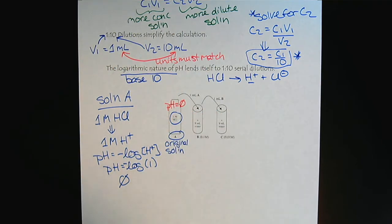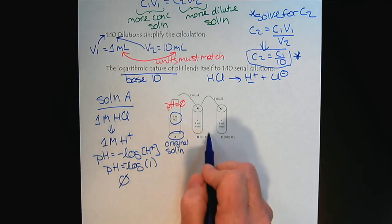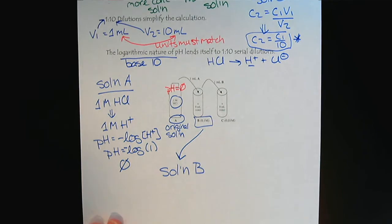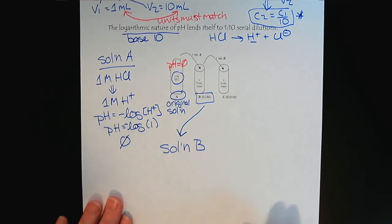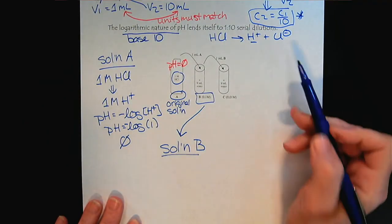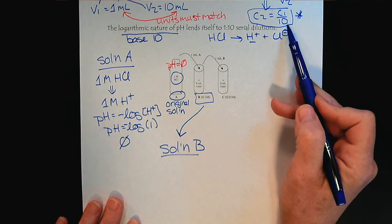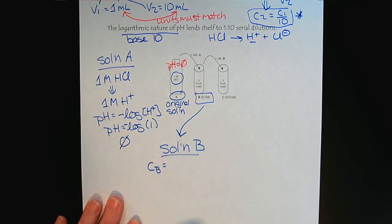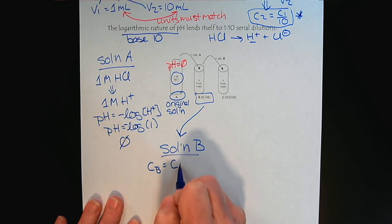Now that we know about solution A, let's look at solution B. Here's solution B, we'll work on solution B right here in this space. So now we need to use our serial dilution calculation. So the concentration of solution B will be the concentration of solution A divided by 10.